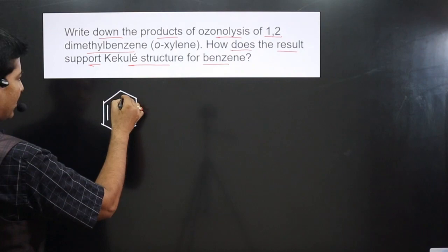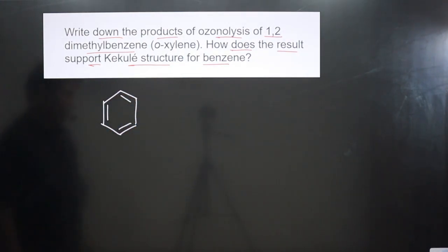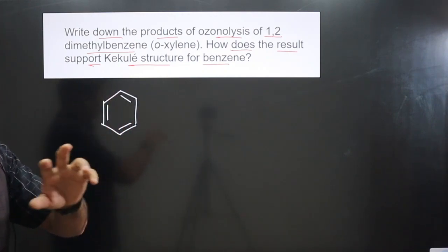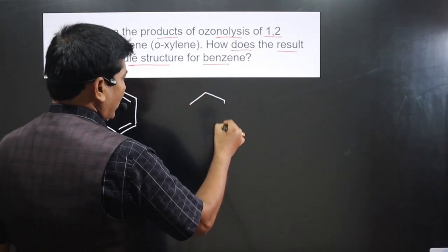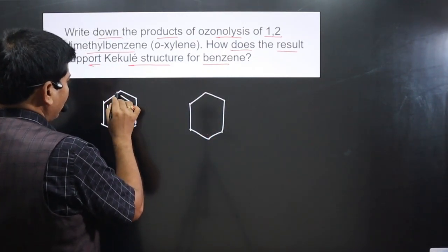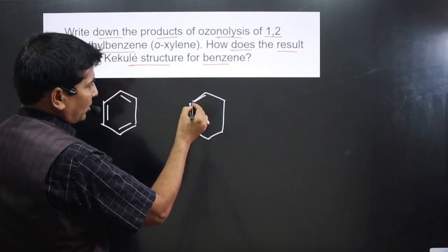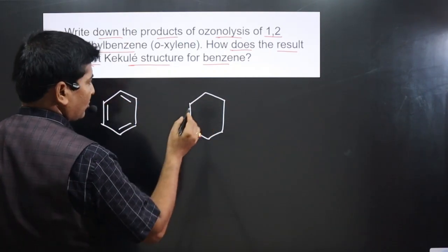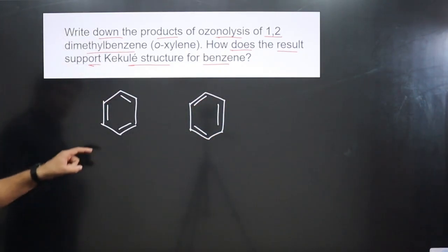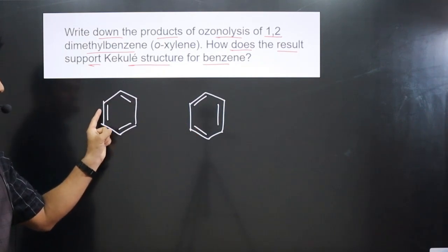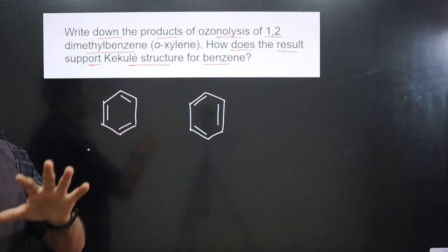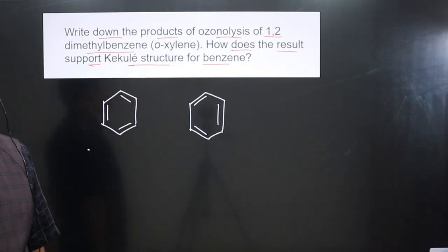The first Kekulé structure has the benzene ring with alternating double-single-double-single-double bonds. When it undergoes resonance and delocalization of electrons, wherever there was a double bond it converts to a single bond, and wherever there was a single bond it converts to a double bond. So double-single-double-single-double shifts accordingly — these two structures are possible according to Kekulé.